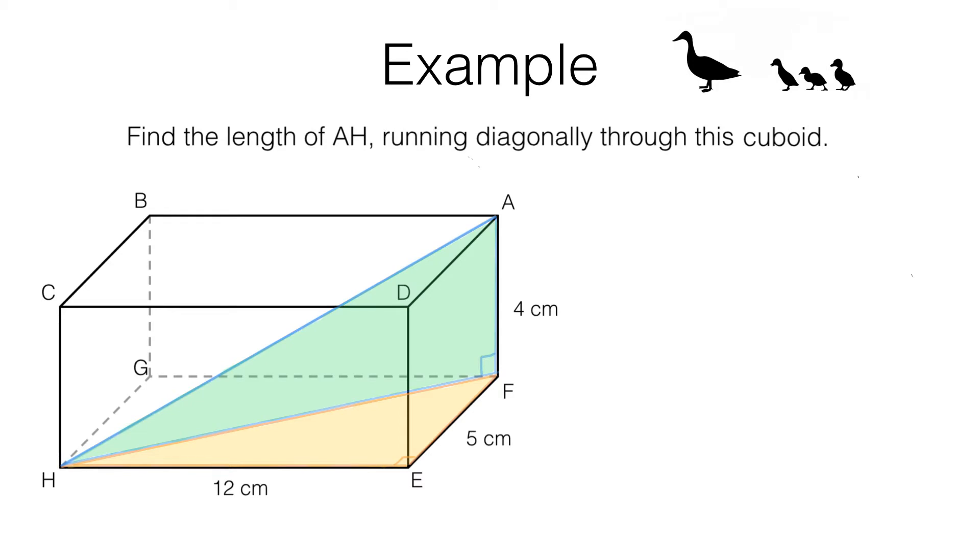Now I'm going to turn this 3D problem into a 2D problem by sketching these two triangles out separately. These are just sketches. They don't have to be drawn accurately. Let's label these up. EF, that's this length here, which is 5cm. And HE is this length here, that's 12cm.